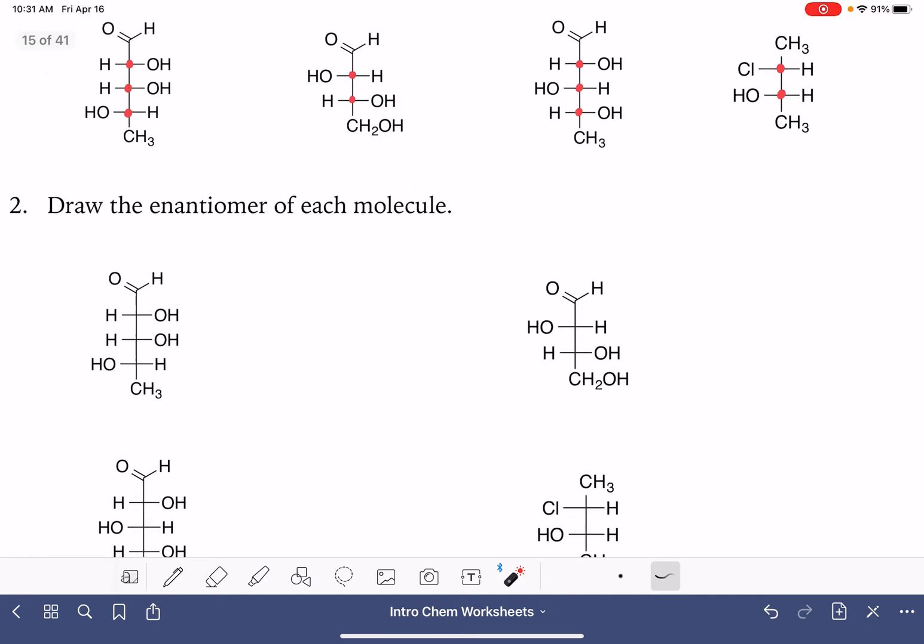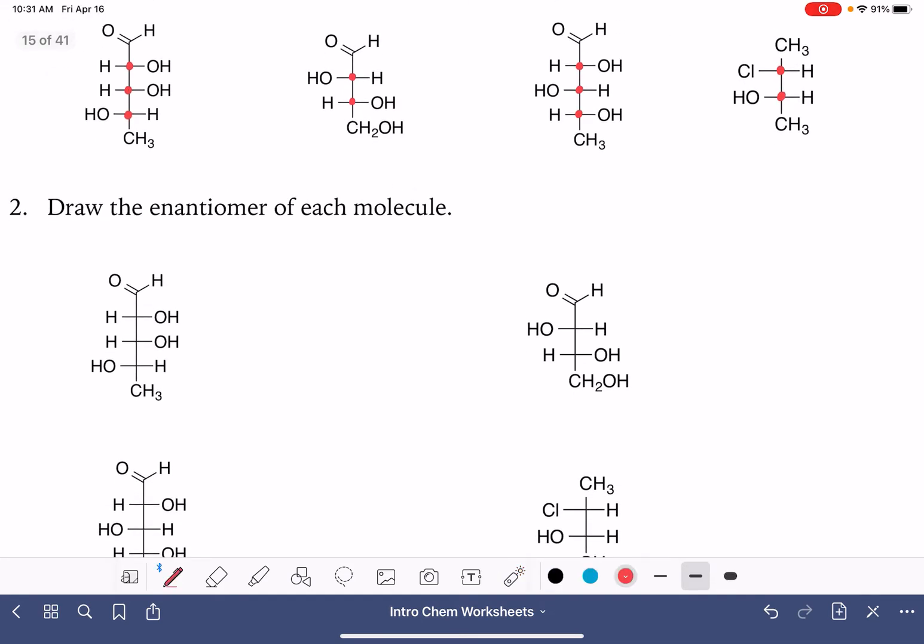Next problem we're going to look at, drawing the enantiomer of each molecule. The enantiomer, that is, as a refresher, that is the mirror image. So when we're being asked to draw the enantiomer, we're literally just being asked to draw the mirror image of the molecule. And for this problem, I'm going to assume that there's a mirror right here and I'm just drawing the reflection of this molecule. I'm going to draw it over here.